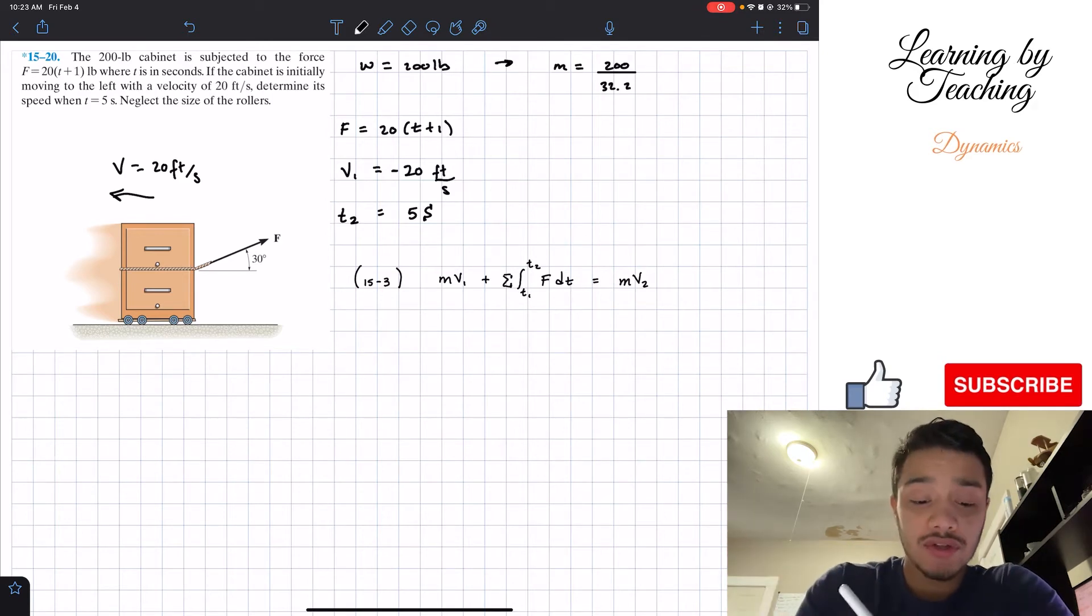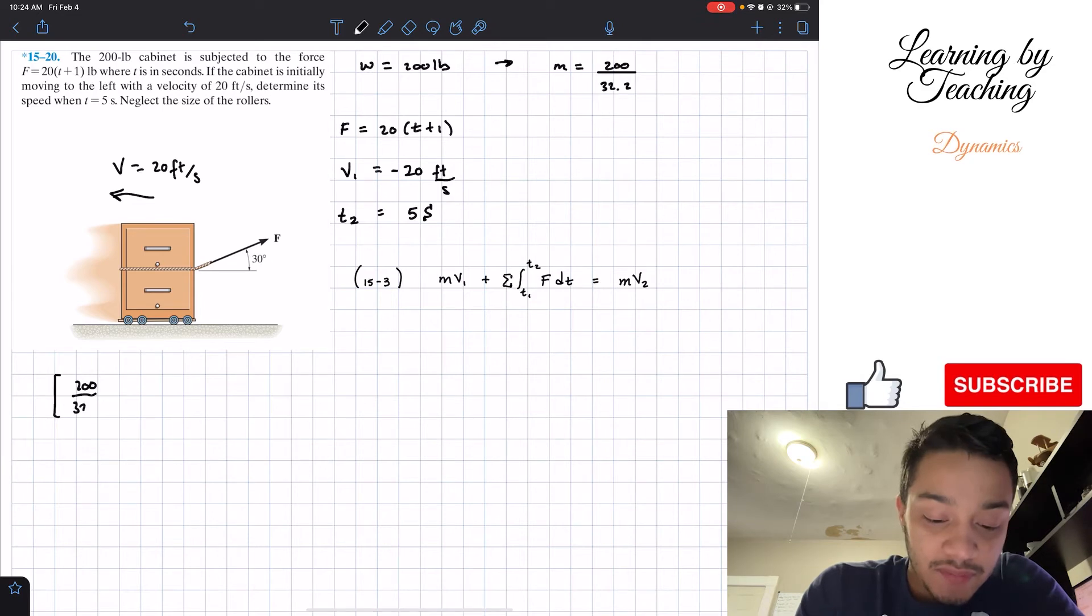So having this equation, let's just start writing it out. So first what we have is the mass, so the mass is 200 divided by 32.2. We got this multiplied by the initial velocity, well, initial velocity is negative 20.